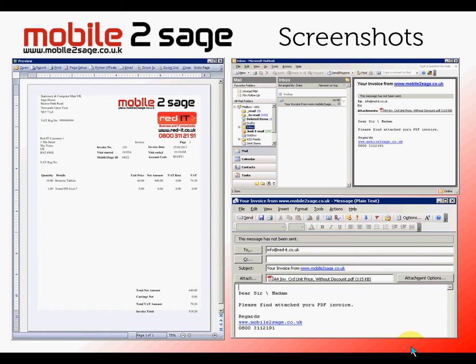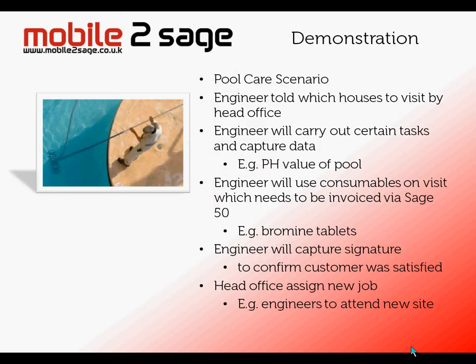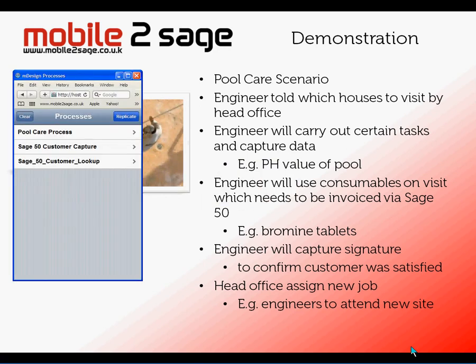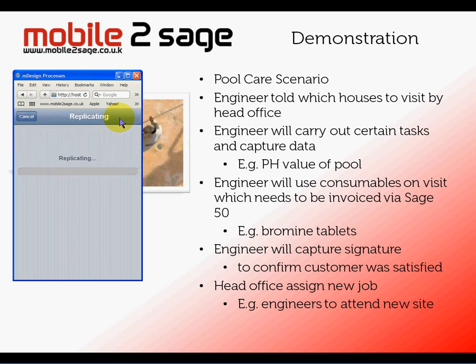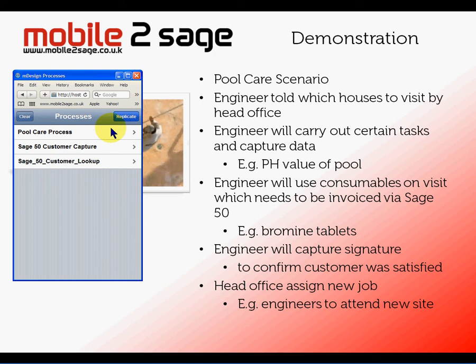So let's go and have a look at it — that's the pool care scenario. The first thing we need to do is bring the browser up. In this particular case I'm going to be using Safari on the desktop. At the moment my pool care engineer is out in the field and he has no jobs associated with him. What I'm going to do is allocate a job through the back office system to him. That's now been sent. Let's just replicate that — it's going off to the server and coming back with any new jobs. There we go — he's been allocated that job.